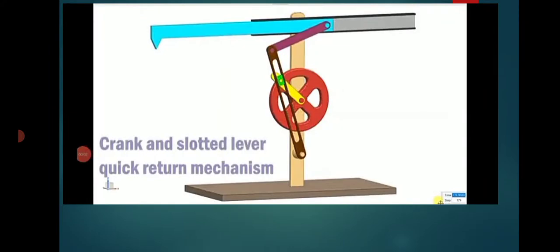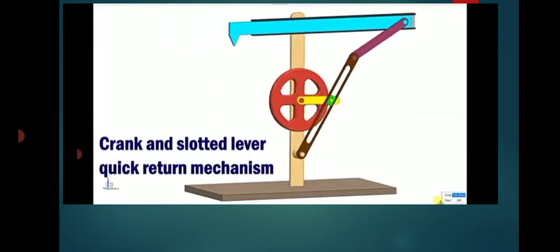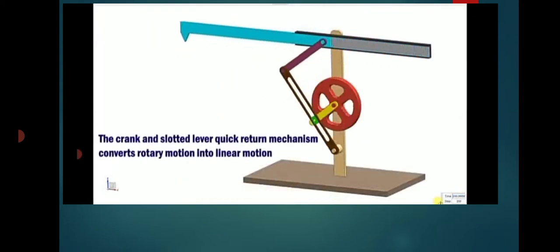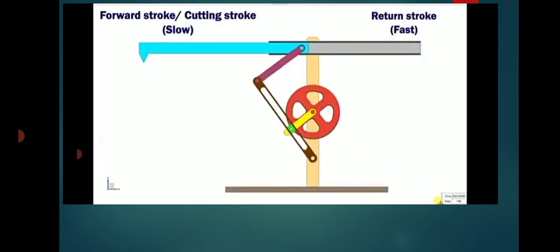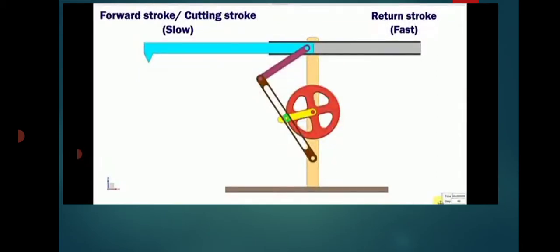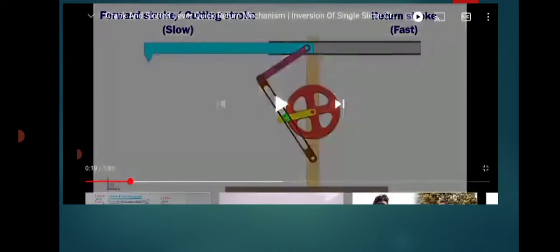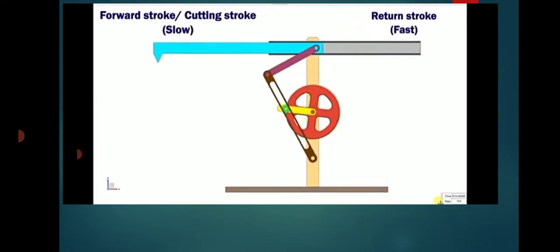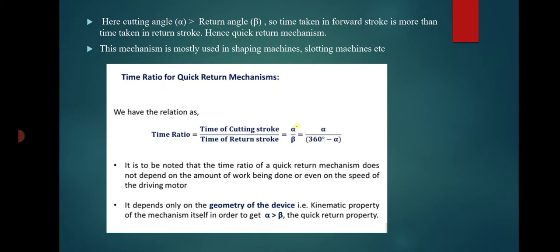This is the crank and slotted lever quick return mechanism. When we rotate the crank, the slotted lever moves up and down and reciprocates. The slotted lever is connected to a link, which is connected to a tool. The tool reciprocates with a forward stroke and return stroke. Looking at the cutting angle versus the return angle — the return angle is less. So the time taken in the forward stroke is more than the time taken in the return stroke. Hence it is called a quick return mechanism.